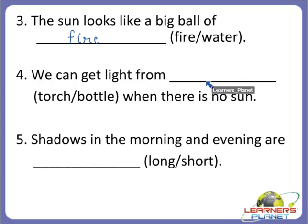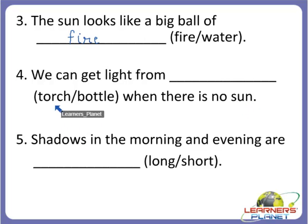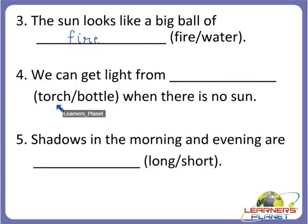We can get light from blank when there is no sun. From where do we get light when there is no sun? For example, at night there is no sun. Do we get it from a torch or a bottle? Bottles do not provide light. So the correct answer is torch — we can get light from a torch when there is no sun.